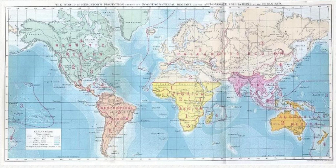Phytogeography is the branch of biogeography that studies the distribution of plants. Zoogeography is the branch that studies distribution of animals. Knowledge of spatial variation in the numbers and types of organisms is as vital to us today as it was to our early human ancestors, as we adapt to heterogeneous but geographically predictable environments.